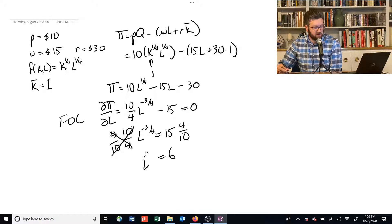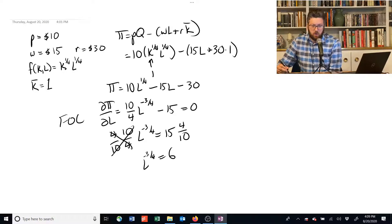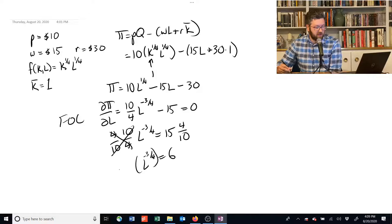We have L to the negative 3/4. So what are we going to do with this? Well, it depends on how you want to go, but I don't like dealing with these negative numbers. So I'm going to multiply everything by L to the 3/4.